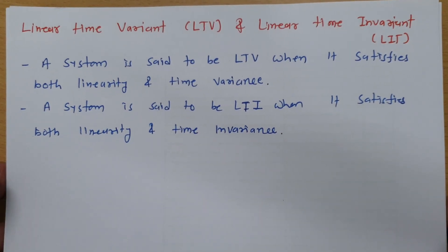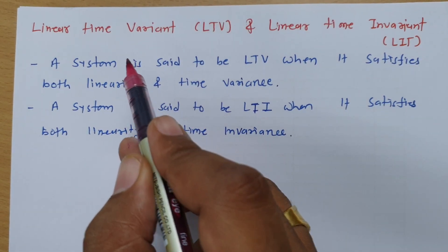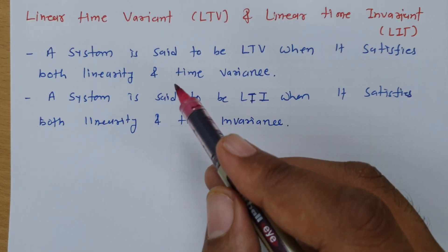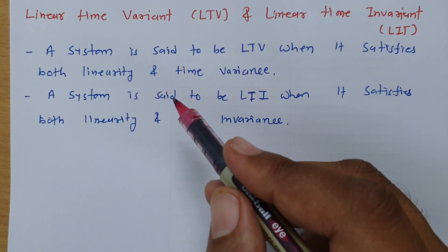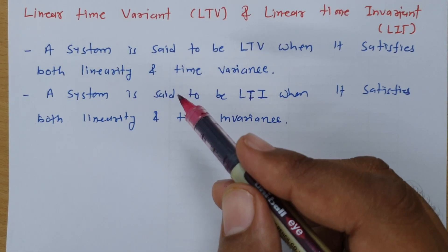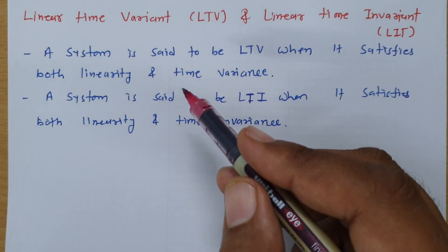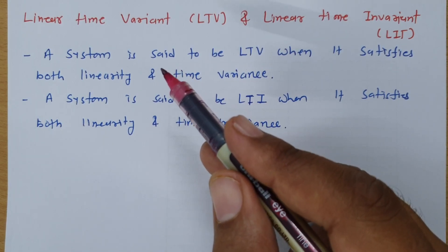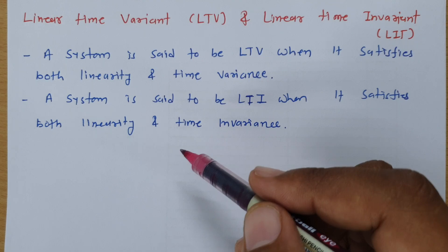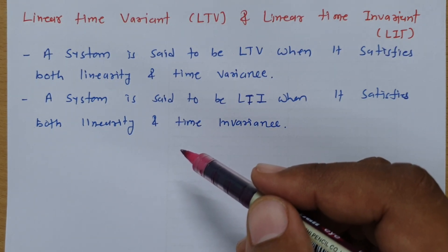Welcome to the Signal and System lecture series. In this session, I'll be explaining linear time variant and linear time invariant systems. In the previous session, I already explained how we can identify the linearity of a system and how we can identify time variance. For linearity, we need to check the superposition principle, and for time invariance, we need to check whether y(n, k) equals y(n minus k) or not.